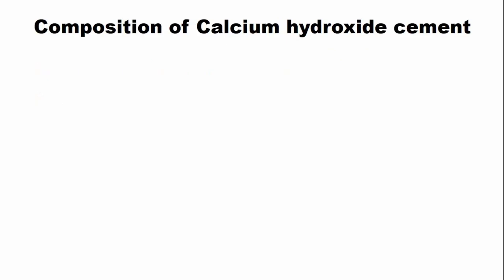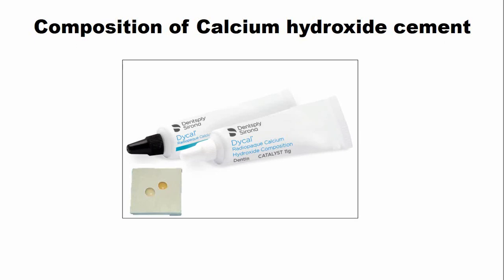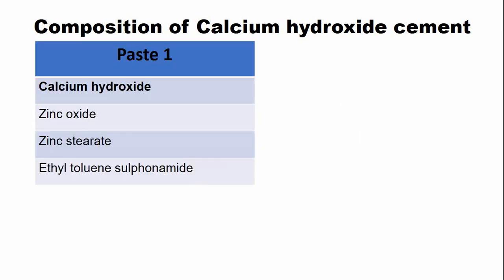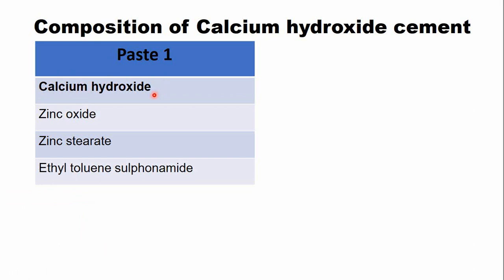The calcium hydroxide cement is mostly available in the toothpaste form. Paste one usually comprises calcium hydroxide along with other ingredients: zinc oxide, zinc stearate, and ethyl toluene sulfonamide. Zinc stearate acts as an accelerator during mixing, while ethyl toluene sulfonamide, being an oil compound, helps in mixing and placement of the cement.